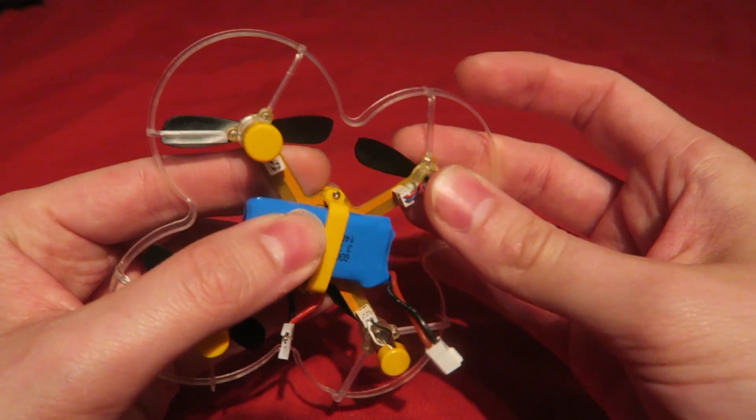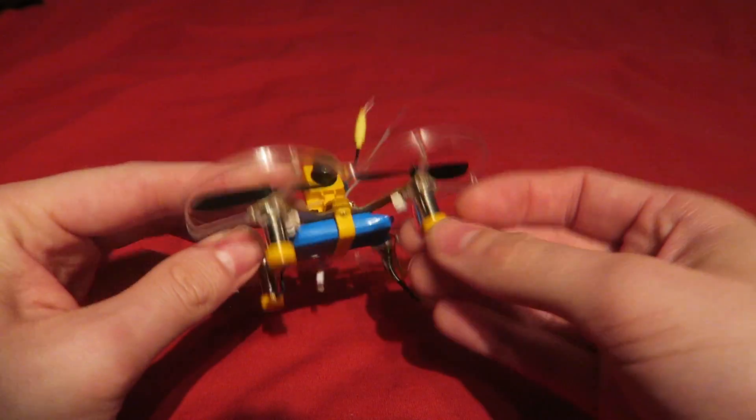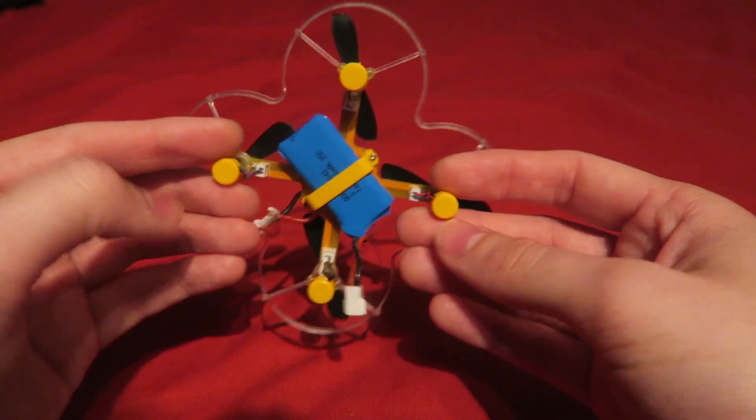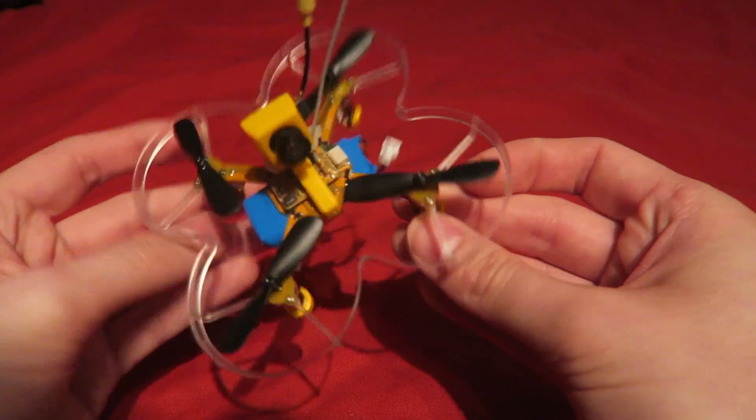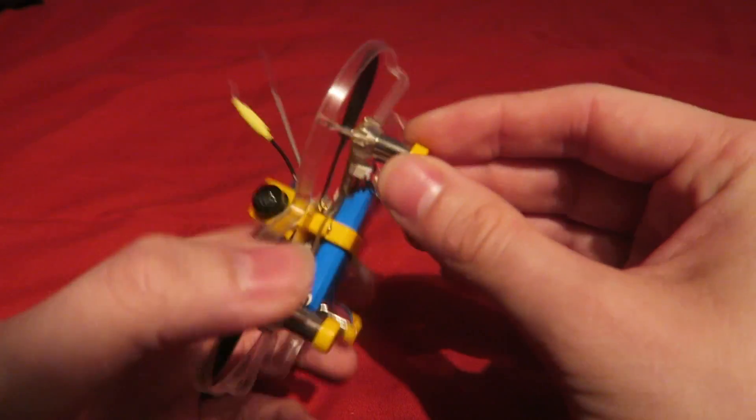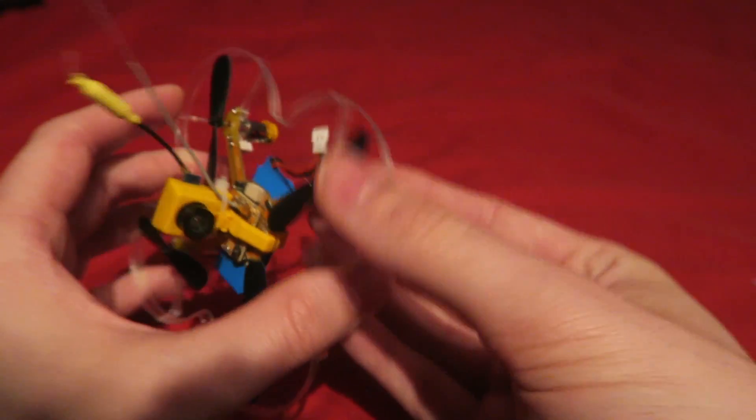And I flew this about in the house and these were popping off left right and center. So when I'm flying this I actually took these off which means that the motors aren't protected underneath.